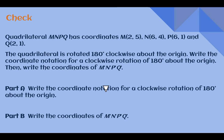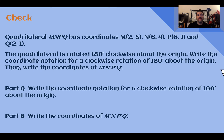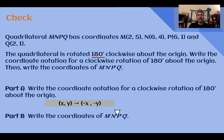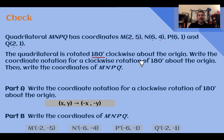Check your answer. The coordinate notation for 180 degrees is (x,y) → (-x,-y). Applying that to find M', N', P', Q' prime — we just make all coordinates the opposite of what they were. M' is (-2,-5), N' is (-6,-4), P' is (-6,-1), and Q' is (-2,-1).